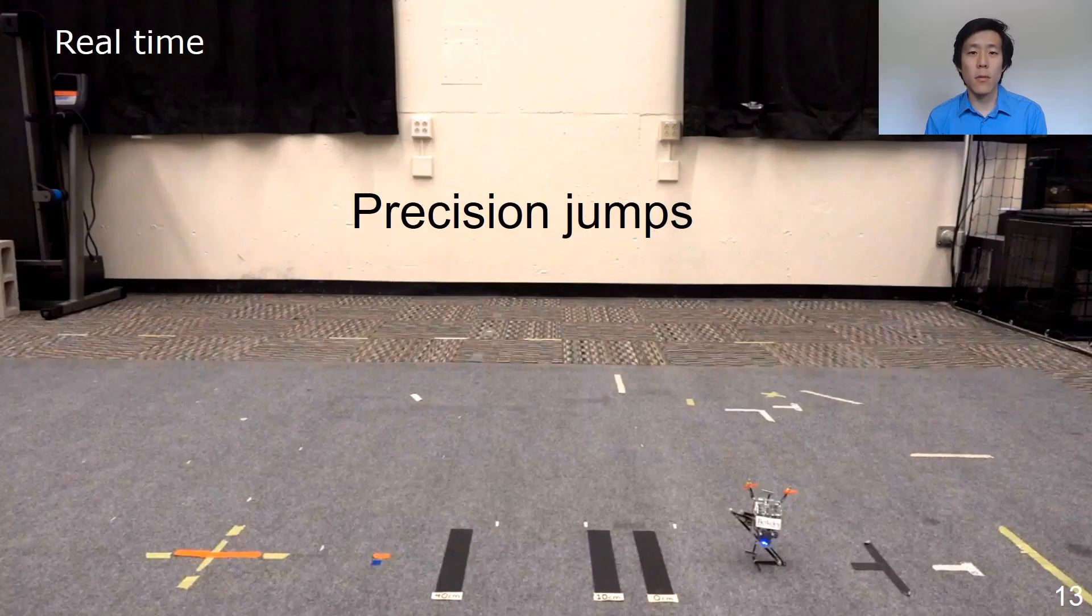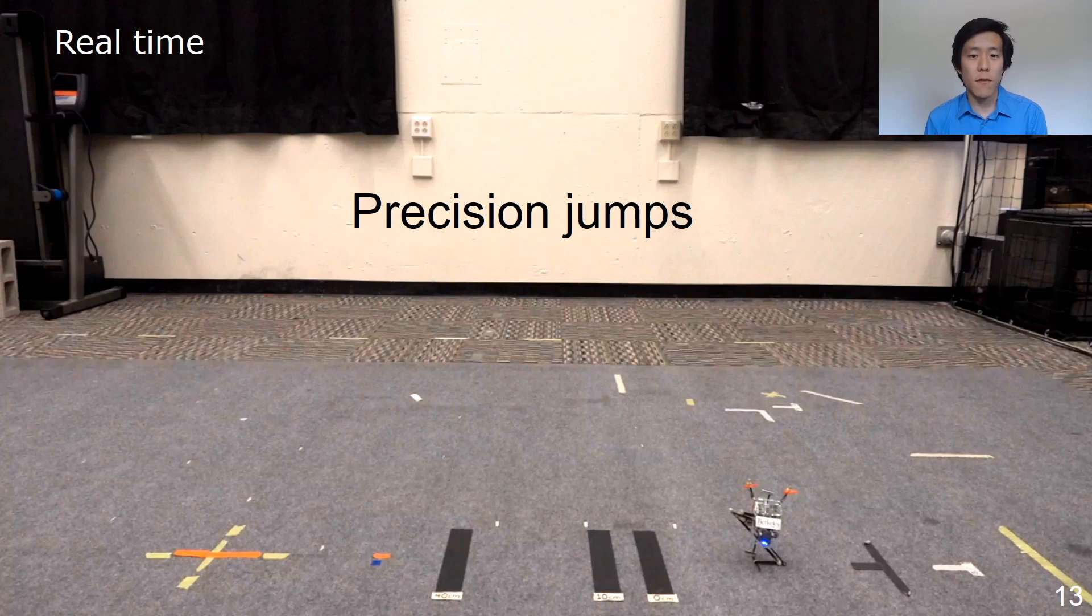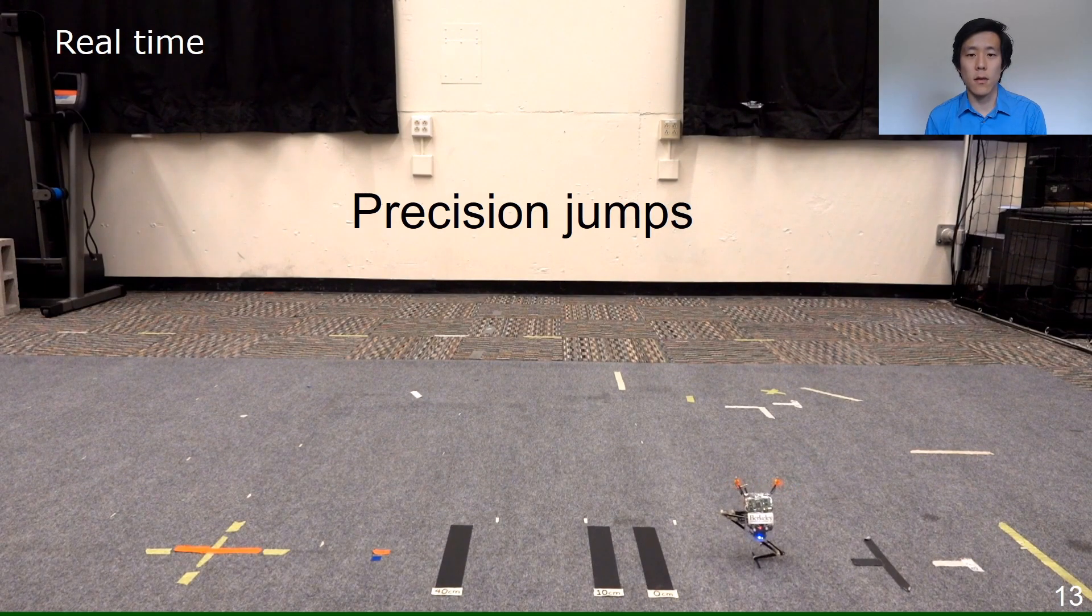These tests are now reliable enough, and the jumps precise enough, that the robot can do a sequence of jumps to narrow targets. Here, each of these tape marks on the floor is only 5 centimeters long. In motion capture, we then commanded Salto to jump to each of these targets in turn.